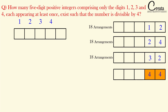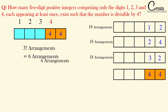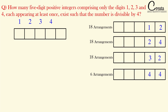Case 4 is slightly different: the last 2 digits are 44, meaning digit 4 repeats twice in those slots. The 3 remaining slots must contain digits 1, 2, and 3 — none repeating. So the number of arrangements is 3 factorial, which equals 6 arrangements.